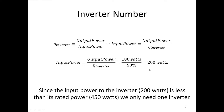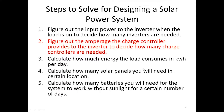The maximum power rating of the inverter is 450 watts, and since the power we're supplying to it is only 200 watts, we only need one inverter. If we got greater than 450 watts, we would need more than one. That's step one. Now for step two, we want to figure out the amperage the charge controller provides to the inverter to decide how many charge controllers are needed.